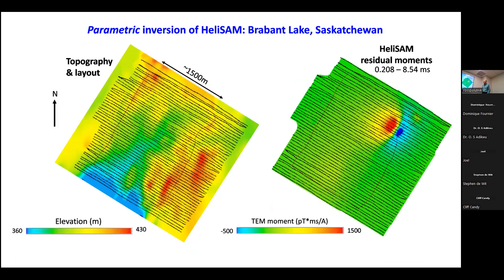On the left is the topography — you can see there's a lake just down there — and on the right is a plan of residual data after subtraction of a half-space response. The half space used was about 0.4 millisiemens per meter, or 2500 ohm-meter background. There are really two main anomalies: one fairly shallow anomaly which is iron mineralization, and then you can just make out a later anomaly further in the south — the newer prospect.